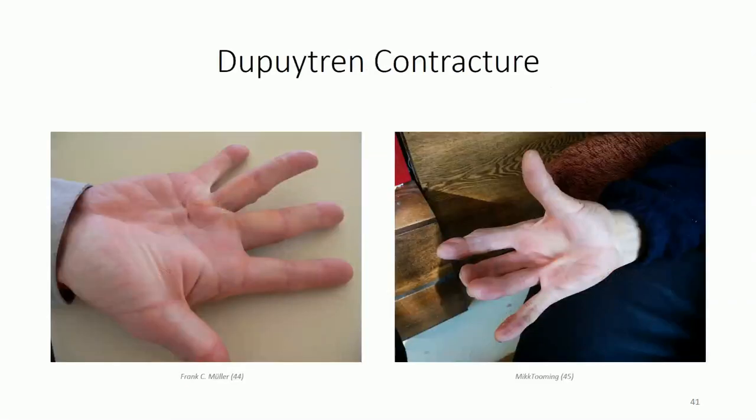The palmar aponeurosis is the fascia involved in the formation of Dupuytren's contracture, involving a thickening and shortening of the collagen fibers that prevent full extension. The cause is idiopathic, meaning unknown, but there appears to be a genetic component, as it is common in individuals of Scandinavian descent and presents with a family history in 60-70% of cases. Treatment typically involves different types of surgical release, although less invasive collagenase injections can also be used.